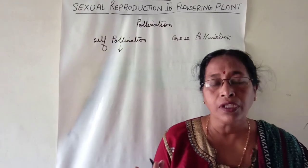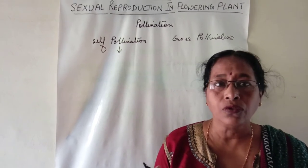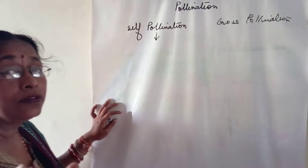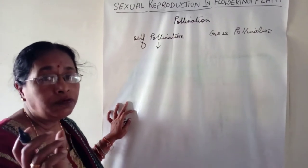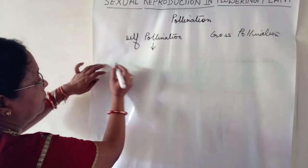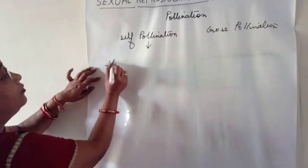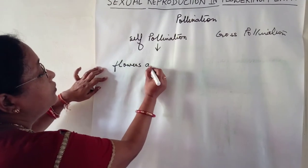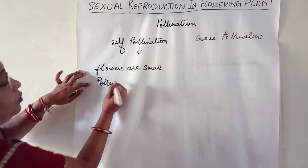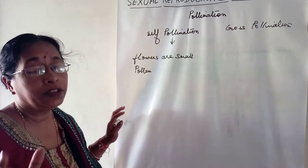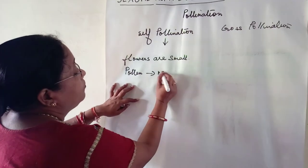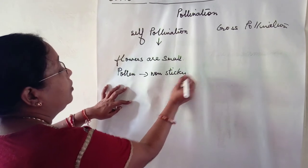Now we shall discuss the different adaptive characters that wind-pollinated flowers have. Wind-pollinated flowers are small in size, inconspicuous, and the flowers are arranged in florets. The colors are not bright. The pollen grains produced by these flowers are numerous — produced in large quantities — and they are very light and non-sticky.